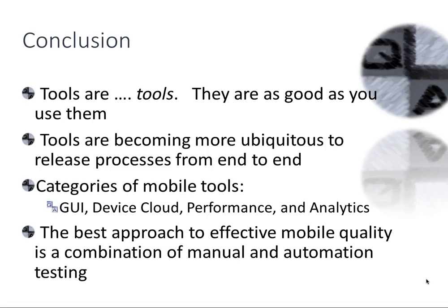Tools are becoming more ubiquitous to releases these days. Applications on mobile are shipping faster than ever — old software like Windows took two or three years. Nowadays, applications ship almost every week to two weeks, sometimes a month. It's even more important to integrate tools into the entire release and end process, including automation. Remember the four categories: GUI automation, device cloud, performance, and analytics.